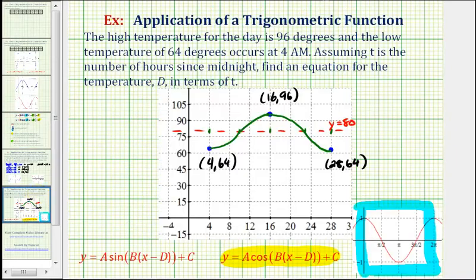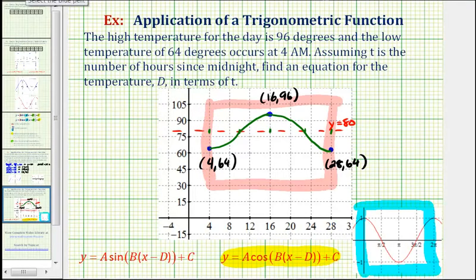So going back to our function, we're going to focus on this piece of the graph. So let's start by determining the value of a. Remember the absolute value of a is equal to the amplitude, which is the distance from the midline to the maximum or from the midline to a minimum. Well, 96 minus 80 is 16, so the amplitude is 16. But because this graph has been reflected across the x-axis, a is actually negative 16.